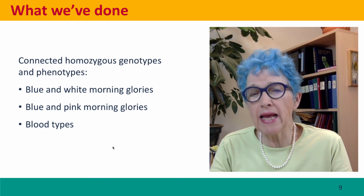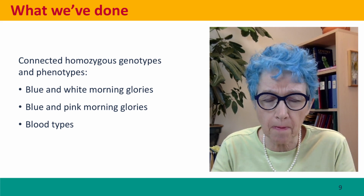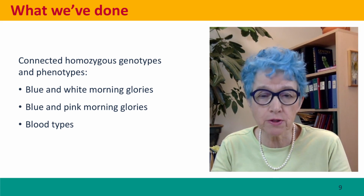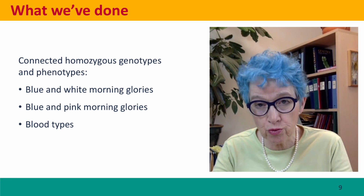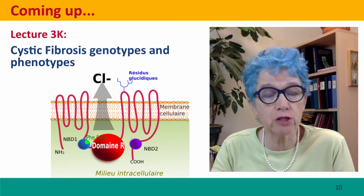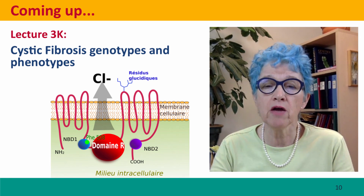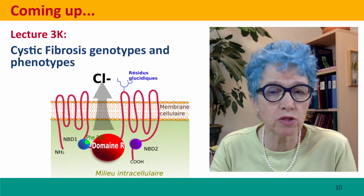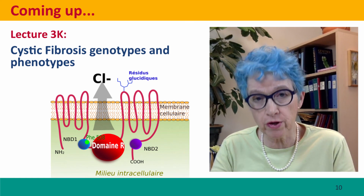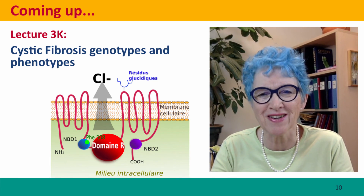In the next lecture, we'll talk about heterozygous phenotypes — what happens when a single individual has two different alleles. But before we do that, we're going to consider a more complex homozygous situation: phenotypes resulting from mutations in the gene responsible for the very common genetic disease, cystic fibrosis. I hope to see you there.